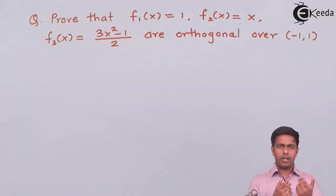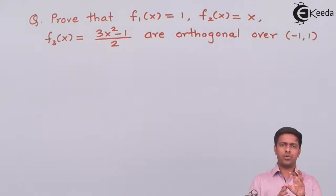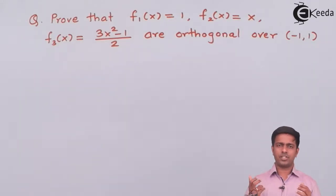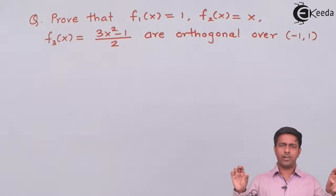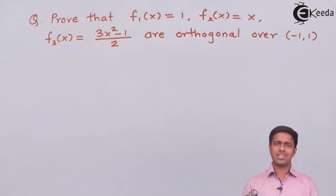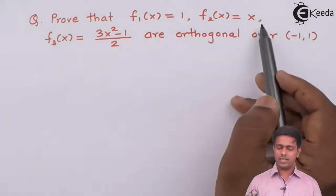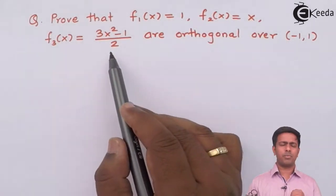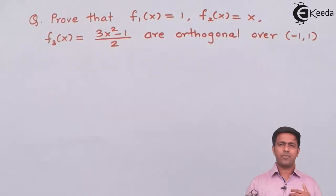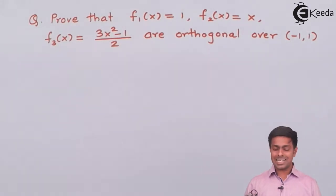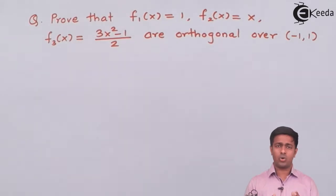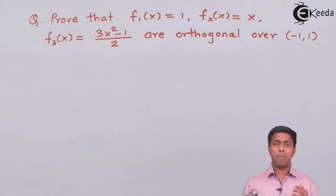The difficulty here is that there are three functions and they have no relation between them — these three functions are completely different. Using the fm·fn condition is convenient when functions share a common format, as seen in the previous question. But here the first function is 1, the second is x, and the third is (3x²−1)/2, which have no relation to each other. So in this case we have to do it manually.